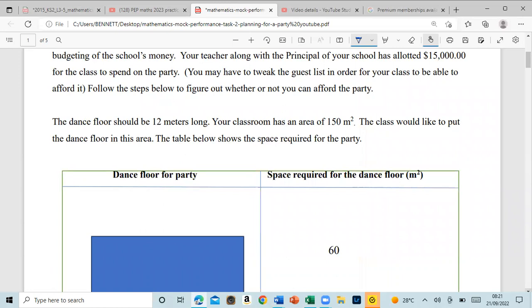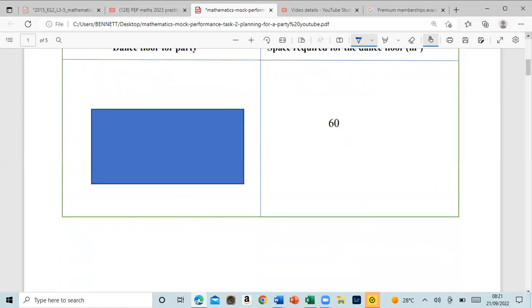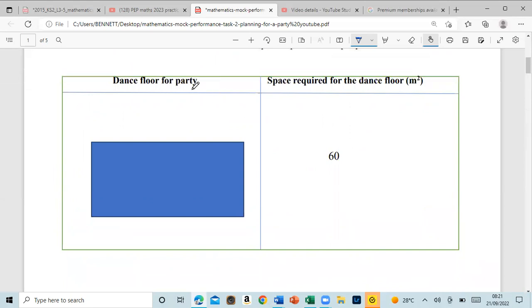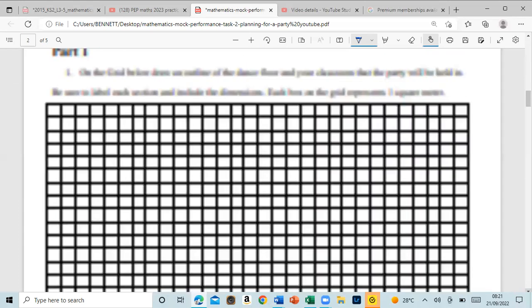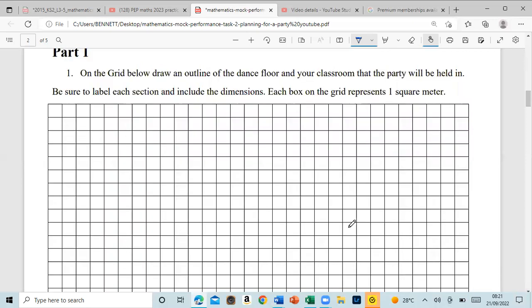The dance floor should be 12 meters long. Your classroom has an area of 150 square meters. The class would like to put the dance floor in this area. The table below shows the space required for the party. Part 1: On the grid, draw an outline of the dance floor and your classroom that the party will be held in. Be sure to label each section and include the dimensions. Each box on the grid represents one square meter.